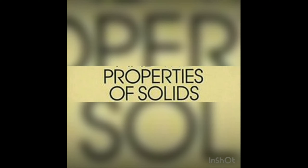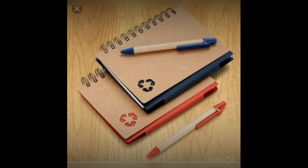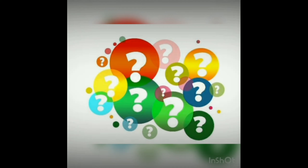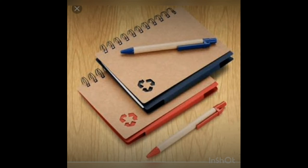Properties of solids: solids have definite mass, definite shape, and definite volume. Take two solid objects like a pen and a book, put them in two different containers — does their mass, shape, and volume change? No. So we can say that solids have definite mass, shape, and volume.